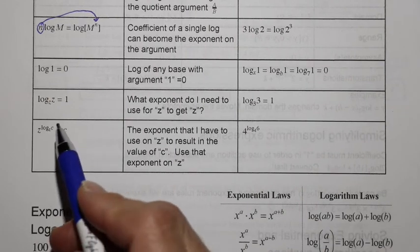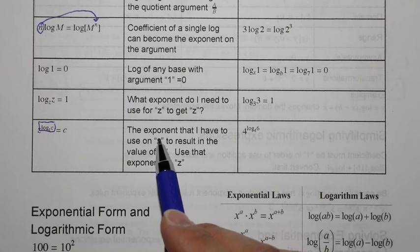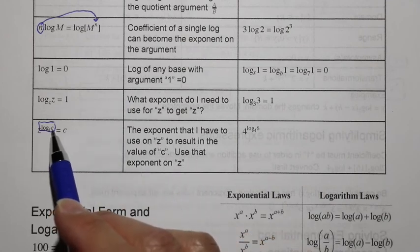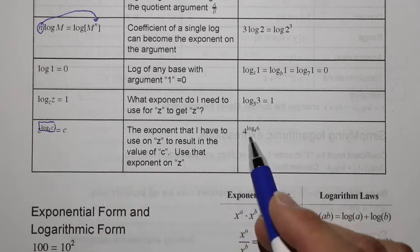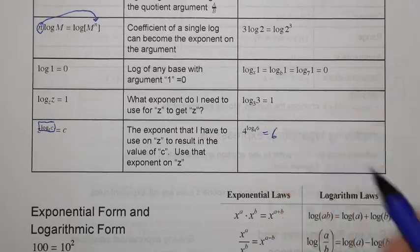This one's a little bit harder to see, but let's take a look at the exponent of z in this case. Here, it says log base z of z. So it means the exponent that I have to use on z to get z, and then look where it is. It actually is the exponent on z. So the result will be z. So when you see this, 4^(log base 4 of 6) is going to equal 6.